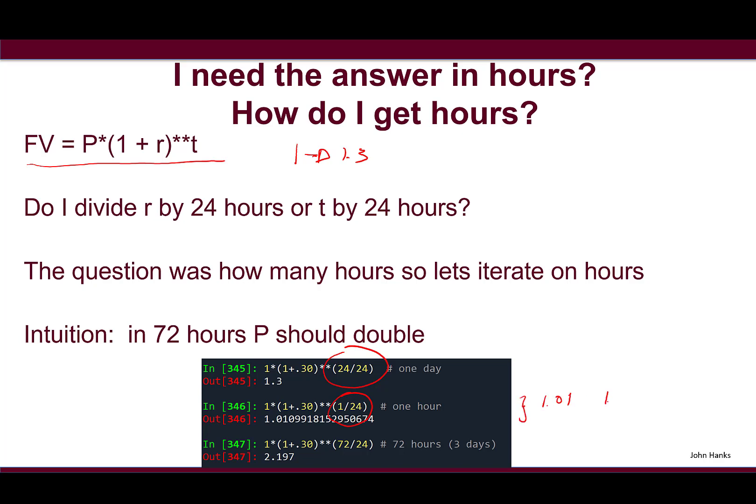I did this on IPython: 24 divided by 24 gives us 1, and that gives us 1.3 as expected. If I divided 1 by 24, which gives us the hourly rate, we're getting an output of 1.01 - one percent growth in one hour.